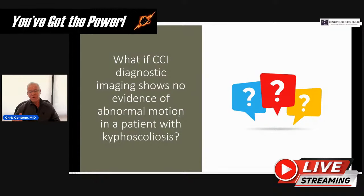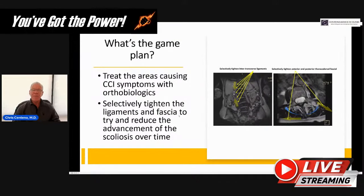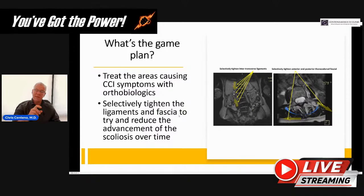In cases where we have no evidence of CCI on diagnostic imaging but the patient has kyphoscoliosis and CCI-like symptoms, the treatment usually doesn't involve tightening internal ligaments like in type 2B alar ligament instability. The game plan is to treat the areas causing CCI symptoms with orthobiologics, then selectively tighten the ligaments and fascia to reduce advancement of scoliosis — tightening the intertransverse ligaments on the side of the convexity and the thoracodorsal fascia on one side.